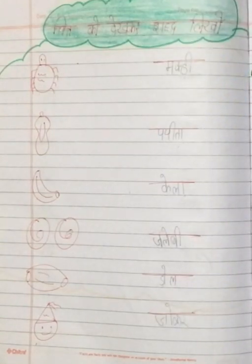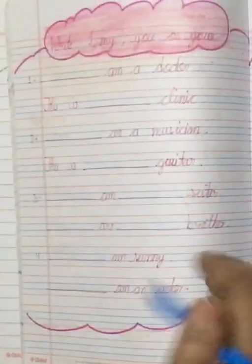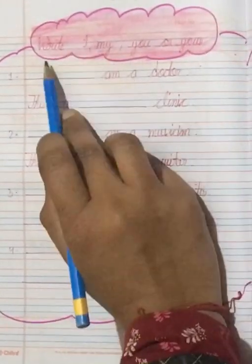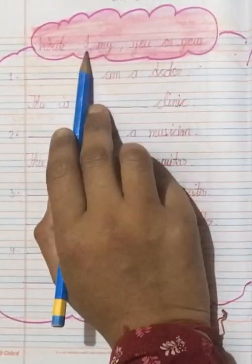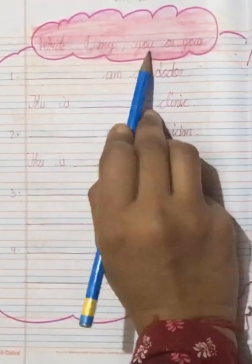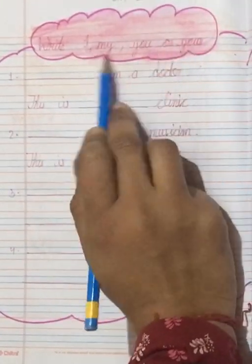Now take out your next notebook. Open your English notebook and today's topic is write I, my, you or your. So aapko I ka use karna hai, my ka and you or your ka. In sabi ka aapko use karna hai.